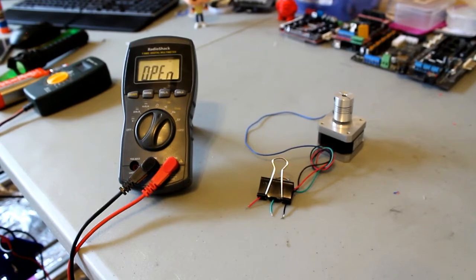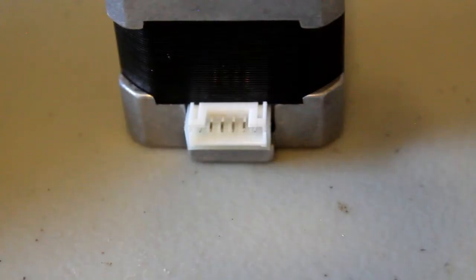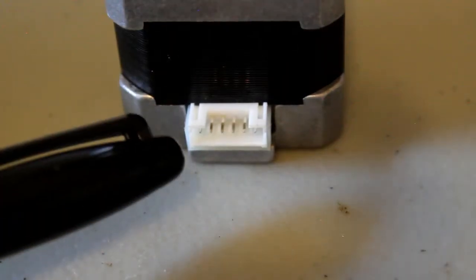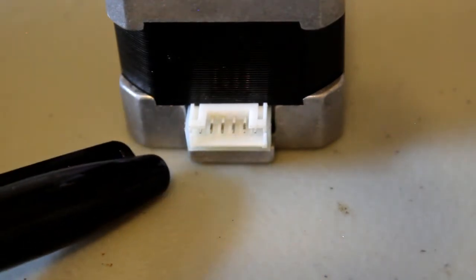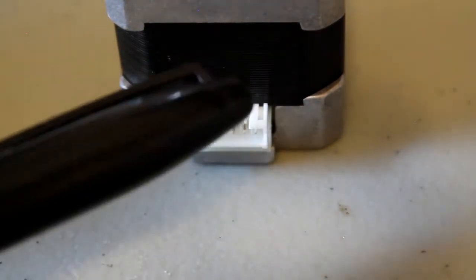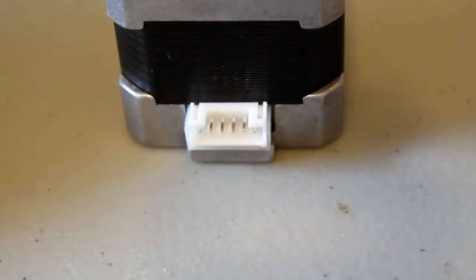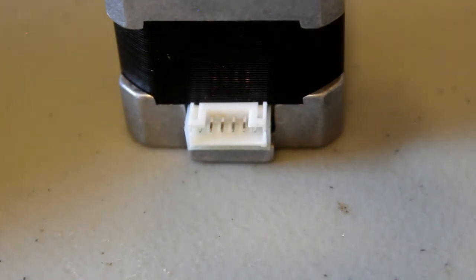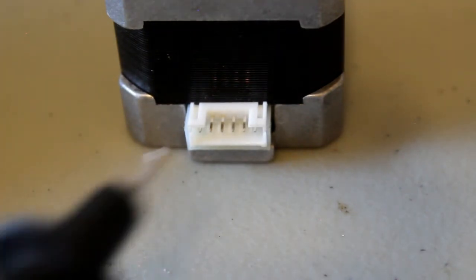Now I'm gonna go ahead and jump to the other motor. Okay, so in this type of motor that has the JST connectors, they usually utilize the two outermost pins and the two in the center. Now that's not a rule of thumb, but it usually happens that way, so we're gonna go ahead and test that. I'm gonna put my lead on one of the outermost pins and test the two in the center.